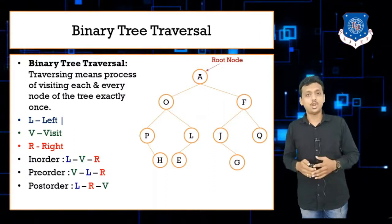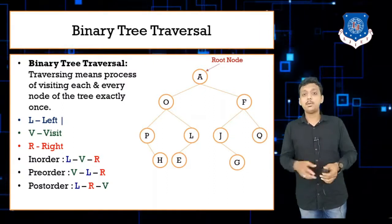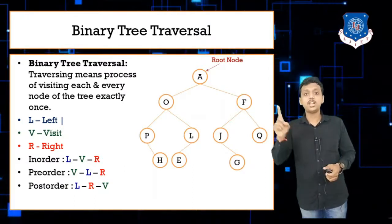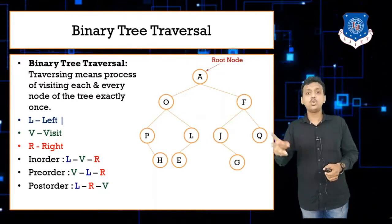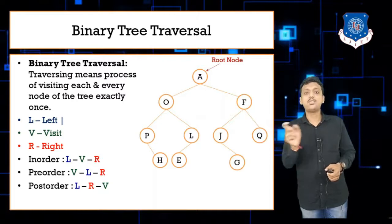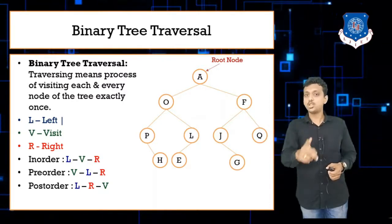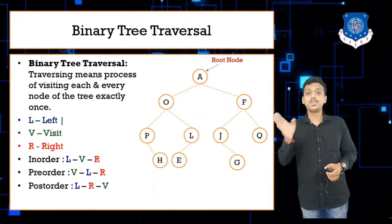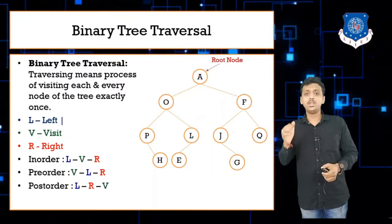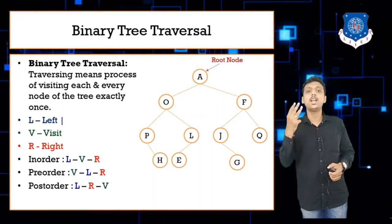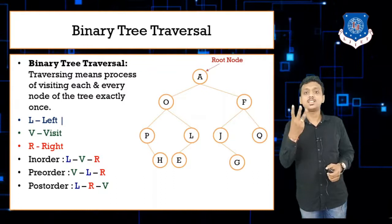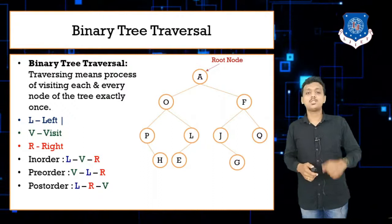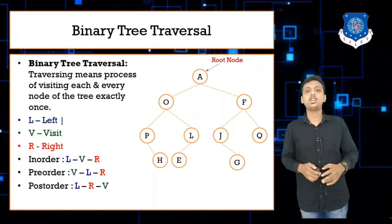Let us start first with the in-order operation. Remember three things: in in-order, it's L, V, R. For pre-order, we choose V, L, R — visit, left, right. And in post-order, we need to choose L, R, V — that means left, right, and visit. So right now we need to perform three different operations: in-order, pre-order, and post-order — these three are the types of traversal operations.